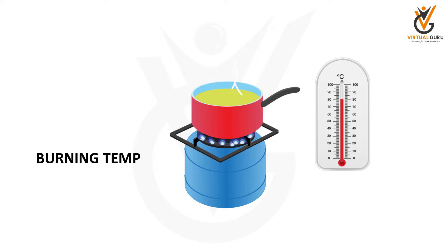There are many substances which have a low ignition temperature and can catch fire easily. There are also substances which have a high ignition temperature and will catch fire only after being heated for some time. For example, kerosene has to be heated for it to catch fire.